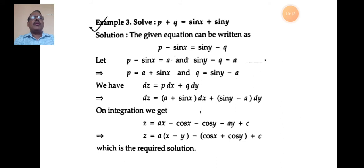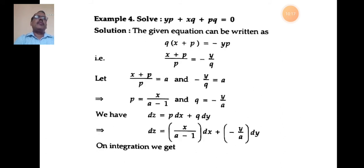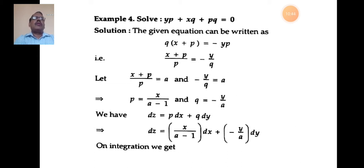Problem 4: Solve yp + xq + pq = 0. This is also third type, containing x, y, p, q with z absent. The equation can be written as q(x + p) = -yp, so (x + p)/p = -y/q. Setting each side equal to a: (x + p)/p = a and -y/q = a, giving p = x/(a - 1) and q = -y/a.